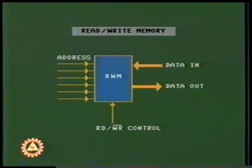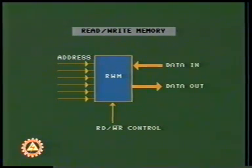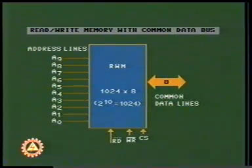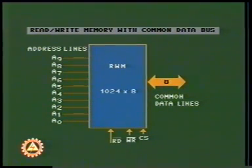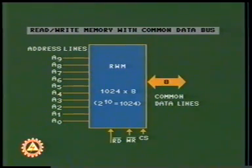Now consider a read-write memory package. Like a read-only memory it has address lines and data output lines, but additionally it has data input lines as well as read-write control lines. As another example, a read-write memory chip with eight common data lines, a read-write control line, and ten address lines can locate 1024 locations. It also has a chip-select line CS, which we will discuss in a subsequent lesson.